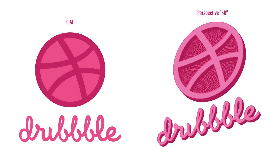Now with that 3D acknowledged let's play with the Dribbble logo. On the left side we have the original logo and the right side is the position I choose to work on. By the way I have changed a little bit the logo — I added a basketball texture to give it more realism. So let's see how I have created this perspective in Adobe Illustrator.